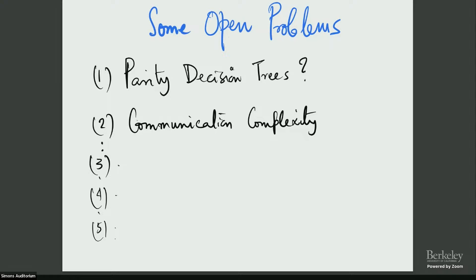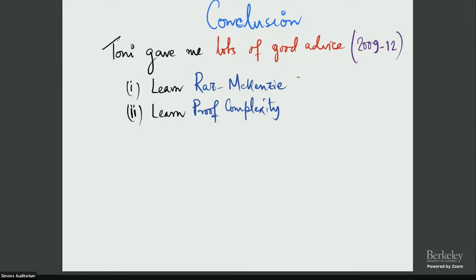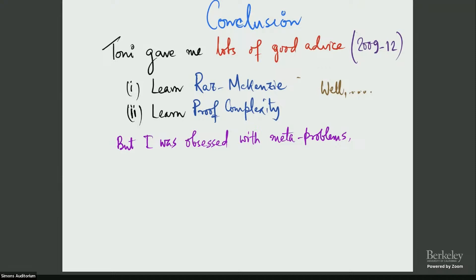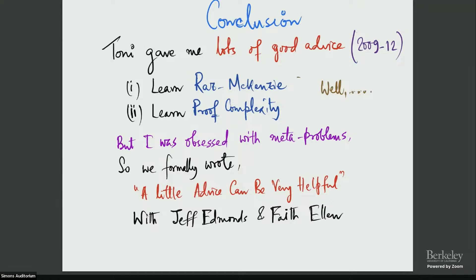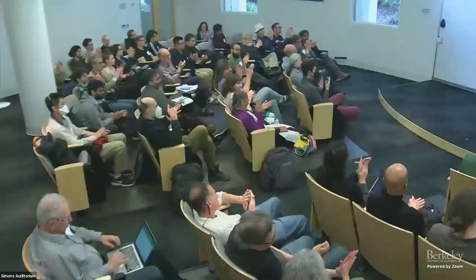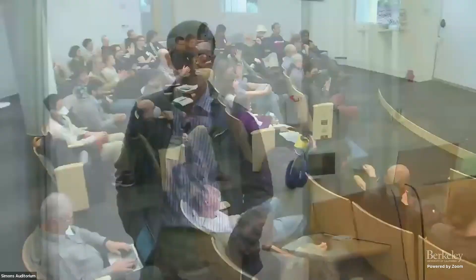To conclude, Tony gave me lots of good advice from 2009 to 2012. When I was a postdoc, I had a really great time there. She told me several times at that point to learn Razborov-McKenzie. I kept on ignoring that. She asked me to learn proof complexity. I never learned it, but now I'm all of a sudden very interested because of this search version of it. I wish I paid heed to her advice. Well, I was interested in my own problems, mostly with meta problems. So therefore we ended up writing a paper titled 'A Little Advice Can Be Very Helpful' with Jeff and Toniann. And it was lots of fun.